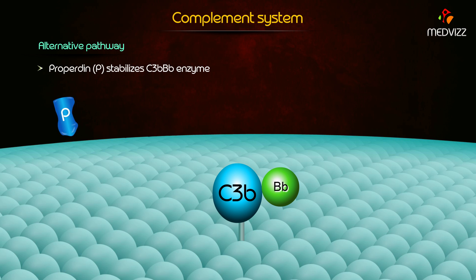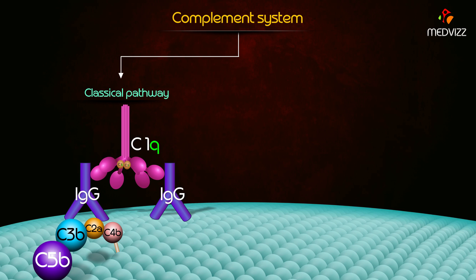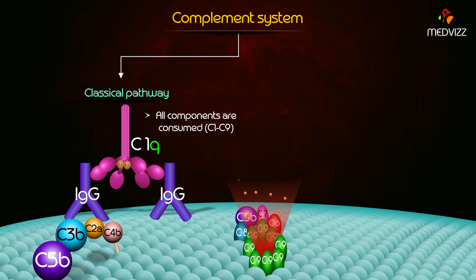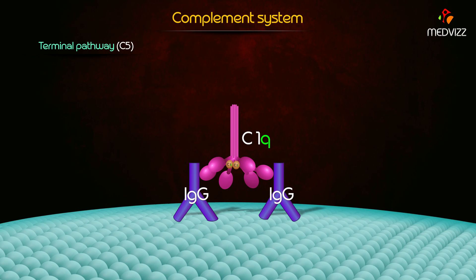The C3 convertase in the alternative pathway is C3b-B(small b). Properdin stabilizes this enzyme. C1, C2, and C4 are not involved in the alternative pathway, so their levels remain normal. In the classical pathway, all components from C1 to C9 are consumed, whereas in the alternative pathway, all components are consumed except C1, C2, and C4.